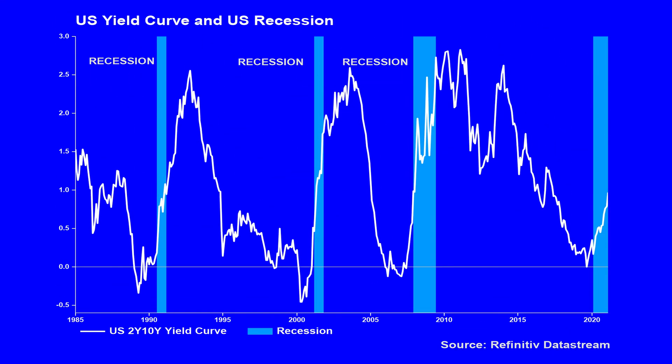If we go back to the historical 2-year, 10-year curve and recession, here we can see the re-steepening that takes place before the onset of recession. The re-steepening usually results from the Fed trying to undo their handiwork and cut interest rates. This drags down yields at the front end, causing a bull steepening of the curve because the 2-year note is now rallying.